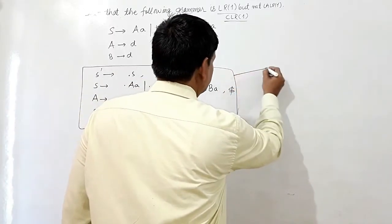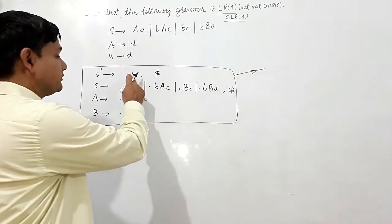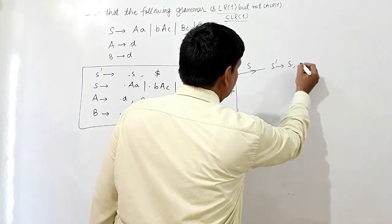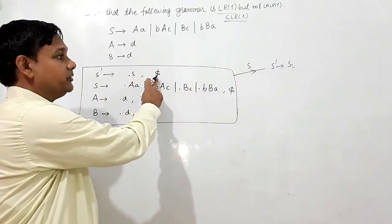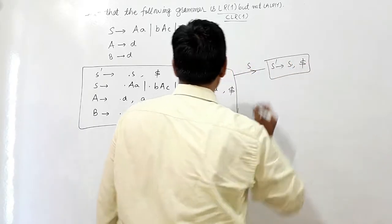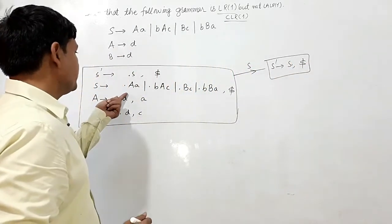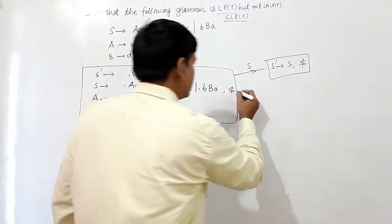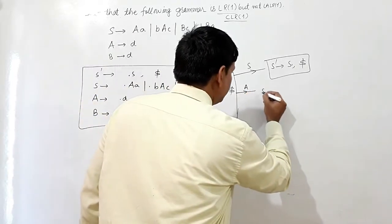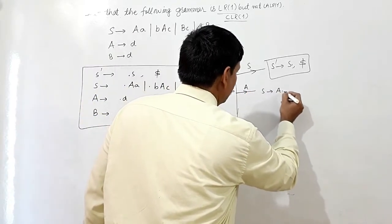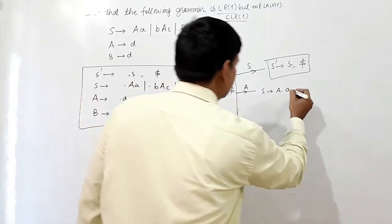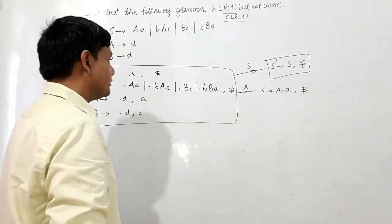If I read capital S, we get S' → S dot, with lookahead dollar. There will be no change in the lookahead. If I read capital A, we get A dot A, with lookahead dollar. There will be no change in the lookahead.